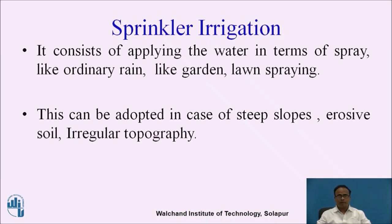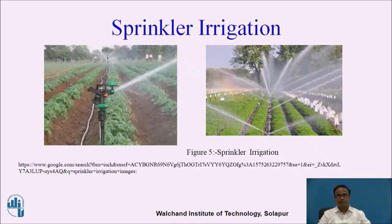In sprinkler irrigation, water is applied in the form of a spray like ordinary rain, similar to garden or lawn spraying. This method can be adopted on steep slopes where there is a risk of soil erosion, and where the topography is not regular. Sprinkler irrigation is most useful for vegetable crops and fruit crops. Water is sprayed through a jet over the crops, but pumping is required, and since the initial cost and operational skill requirements are high, it is a costly method.